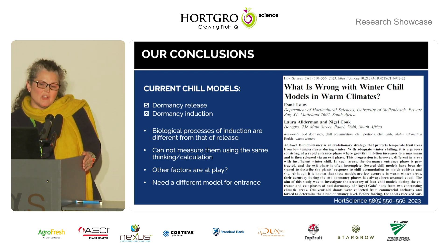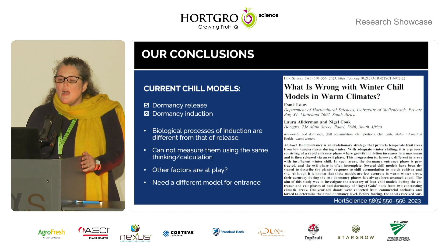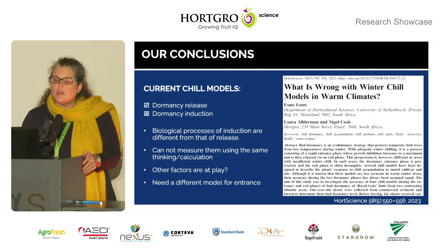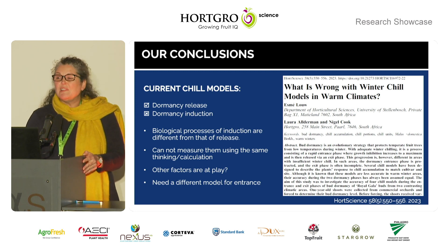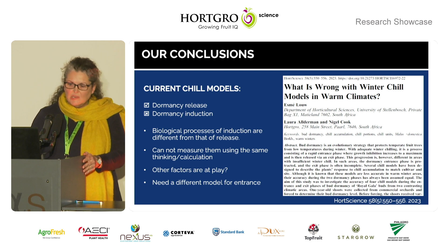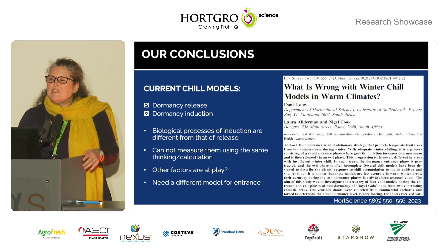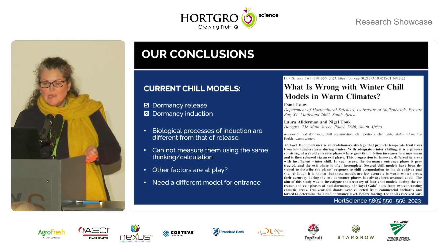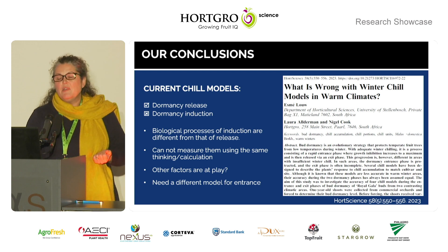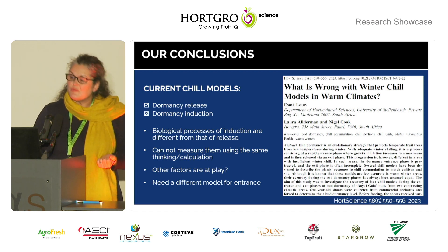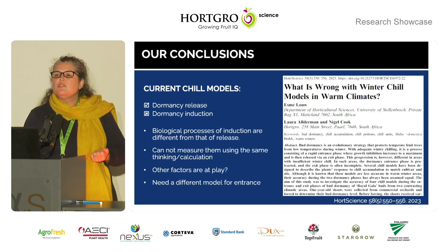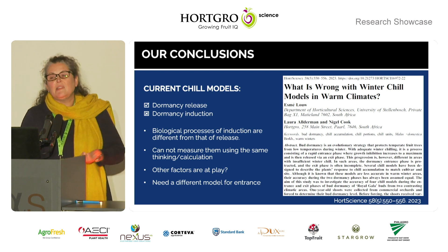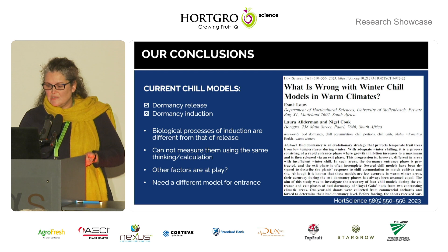Our conclusions: the current chill models are good predictors of chill accumulation in the dormancy release phase, but this is not true for dormancy induction. The models are not well suited to measure the biological processes that happen during dormancy induction. The two processes seem to be vastly different and cannot be measured using the same models and the same thinking — this calls for a different thought process when we look at entrance and exit. So the short answer to what is wrong with winter chill models in warm climates: they are not suited to measure the entrance into dormancy, and because this is so accentuated in warm winter areas, the errors these models make are much larger there. Thank you.